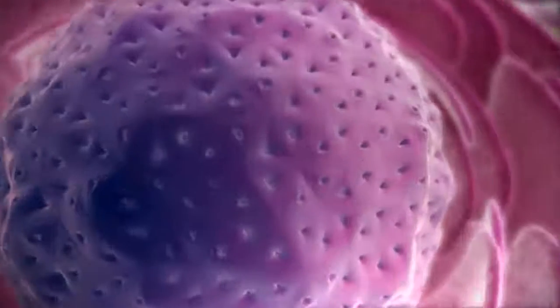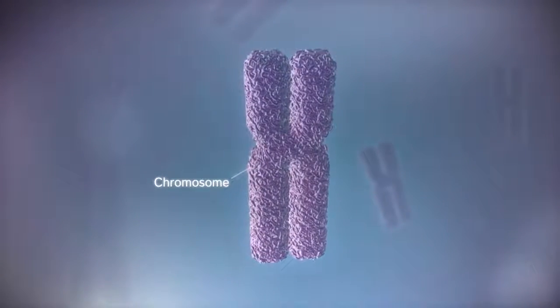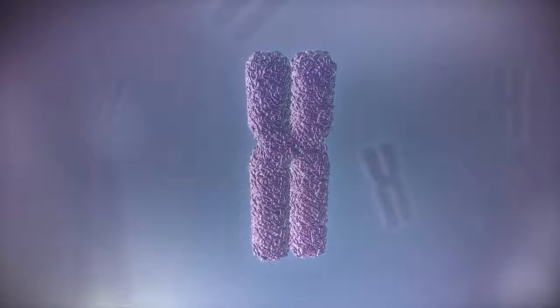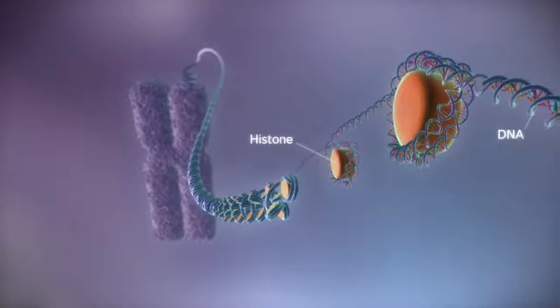In humans the genome is split between 23 pairs of chromosomes. Each chromosome contains a long strand of DNA, tightly packaged around proteins called histones.